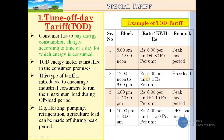The third block is 6 PM to 10 PM. The charges for this block are 6 Rupees per unit plus 1.10 Rupees per unit additional charges. This is again a peak load period, so the charges increase compared to the base load block.